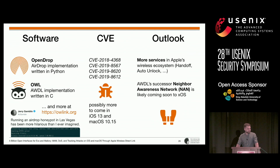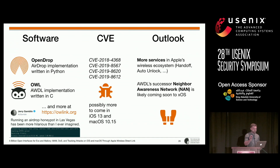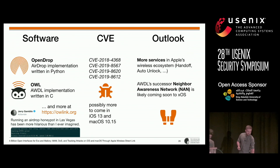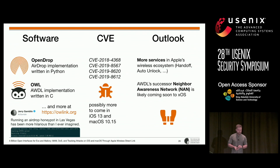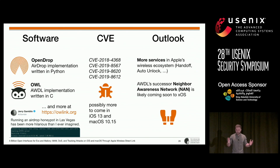Another question: You've got four CVEs and possibly more to come. How was the vulnerability disclosure process different for a wireless stack compared to more traditionally deployed software? Answer: It was my first vulnerability disclosure, so I don't have much experience. Apple has a product security team you can contact via email — you send them the paper and what you found, and then you get feedback on it.